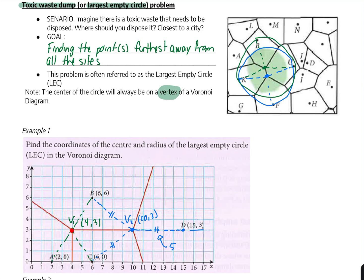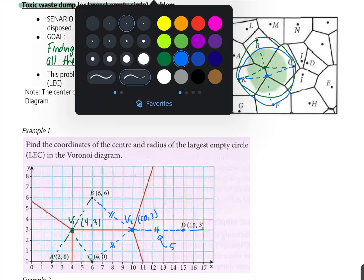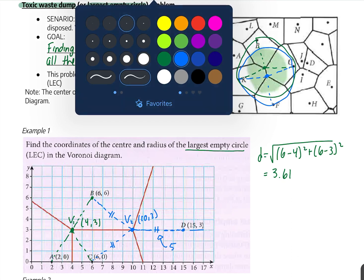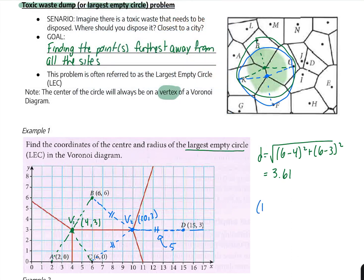Now let's find the distance of one of the green lines — they're all equal, so it's enough to find just one. I'll focus on B and V1. Using the distance formula, substituting the variables: √((6−4)² + (6−3)²), which gives a distance of 3.61. Therefore, the coordinate of the largest empty circle is V2, so the coordinate we're looking for is (10, 3).